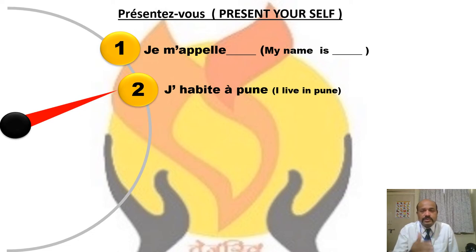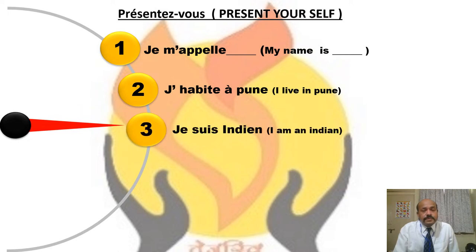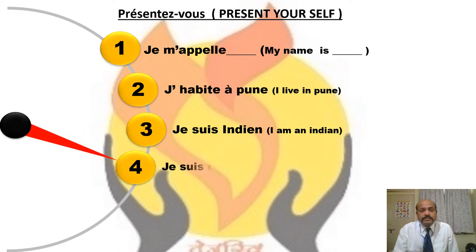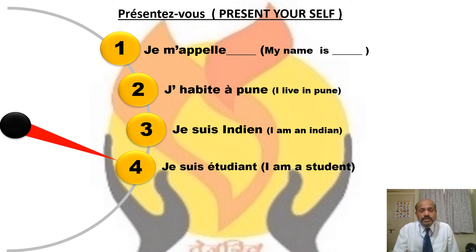You can use à Pune, or à Surat, or whichever city. Third, what is your nationality? Je suis Indien — I am an Indian. Next, what is your profession? Je suis étudiant — I am a student. If it is feminine, we add an E: Je suis étudiante.